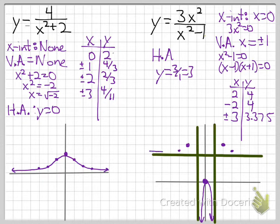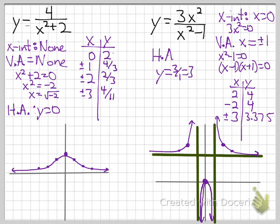Plotting these points, we can see the graph following the horizontal asymptote y equals 3 on the outside. We can plug in values between 0 and 1 for more approximate values. The key is plotting points, confirming where the graph fits, keeping the asymptotes in mind, and getting a general approximation of the sketch.